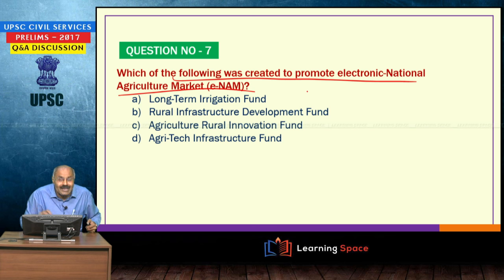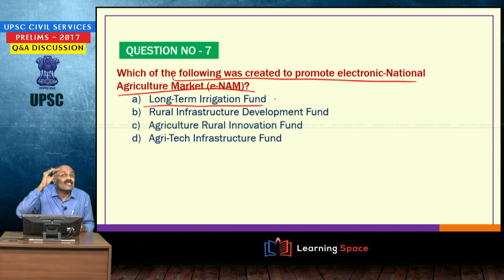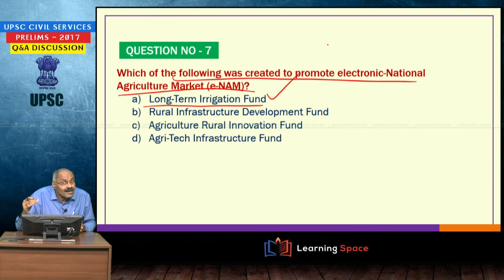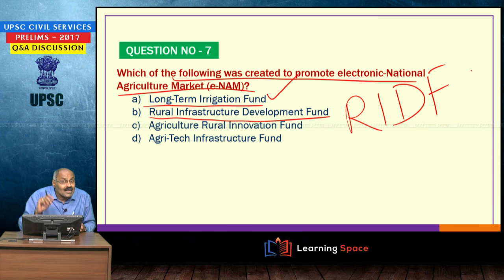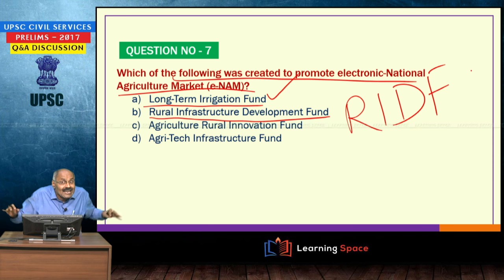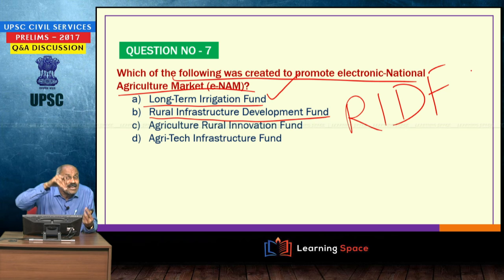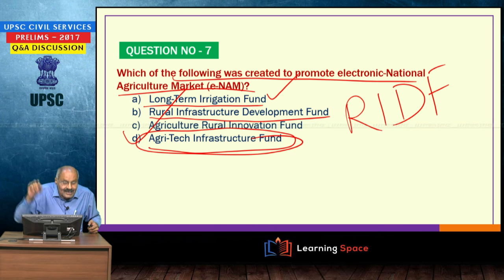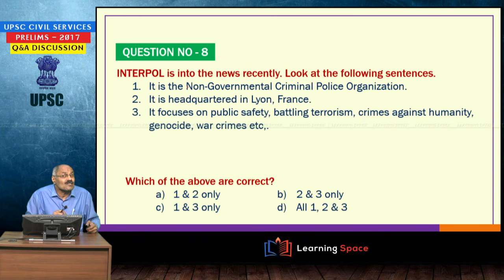Regarding which fund was created to promote ENAM: the long-term irrigation fund is maintained by NABARD and is aimed at increasing the irrigation potential of the country. The rural infrastructure development fund, RIDF, is also maintained by NABARD — if banks fall short of priority sector lending, they deposit money in RIDF. The agri-tech infrastructure fund was created for the expansion of the electronic national agriculture market in India.